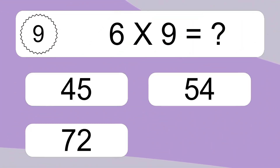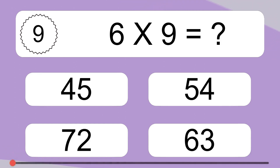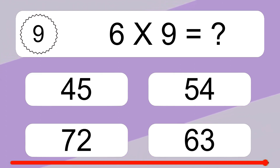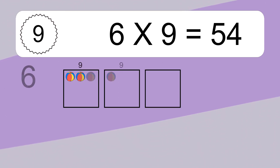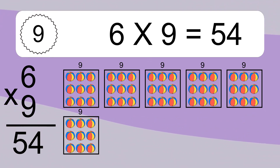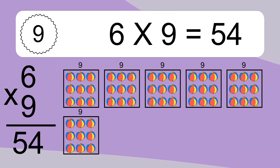6 times 9 equals what? 6 times 9 equals 54. We have 6 boxes, and each box has 9 colorful balls inside. If you count all the balls in all the boxes together, you will have 6 times 9 balls. This equals 54 balls.